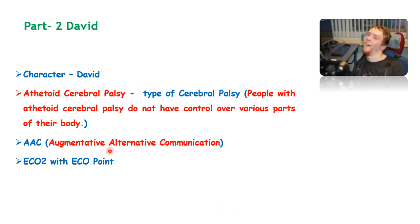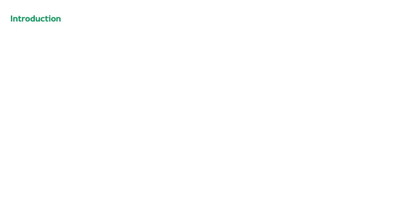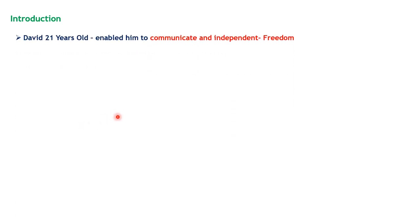These are the things you should remember first: the character we are going to see is David, he is affected by a different type of cerebral palsy, and he started learning AAC — augmentative alternative communication — which helps him overcome his disabilities. Eco2 with EcoPoint is a device that helps him do a lot of activities. David is 21 years old and he feels that technology is very important because it helped him communicate with people and be independent.